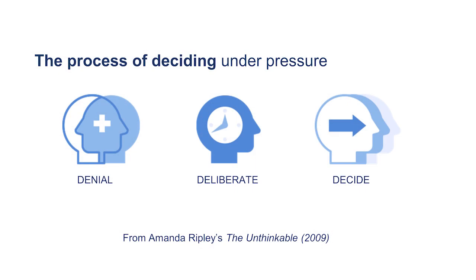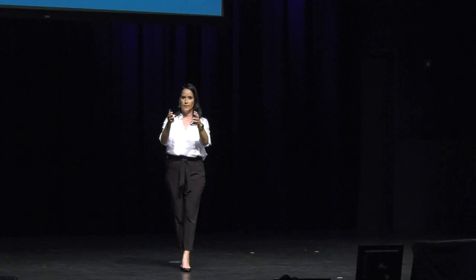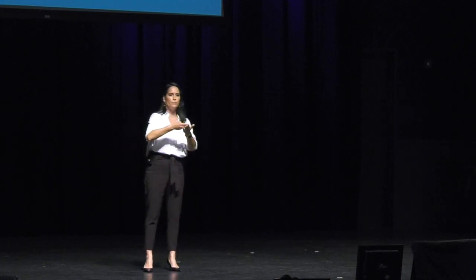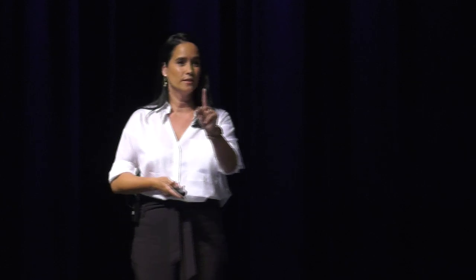I want to refer to Amanda Ripley. She simplified the process of how we make decisions through this denial phase — and I'm really good at that. While we stay in denial, we deliberate, and then we decide. It could be the right decision or the wrong decision, but we decide nevertheless. Some people stay in denial for a long period of time and then quickly deliberate and decide. Some people go through those three steps really quickly. And this is just one individual — everybody in the city is doing the same thing at different pacing.